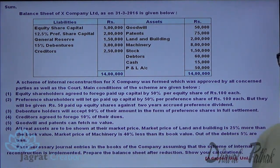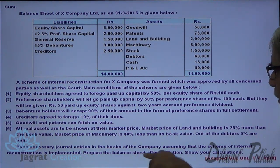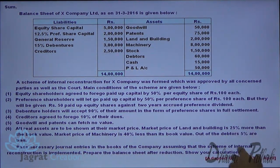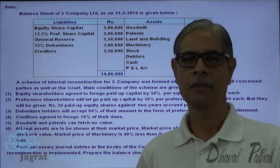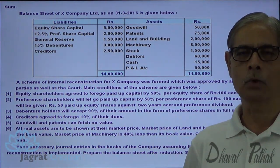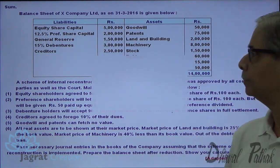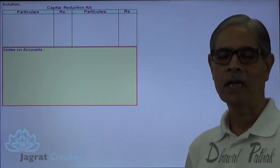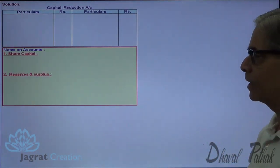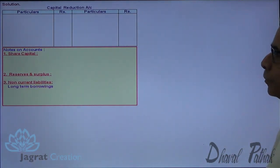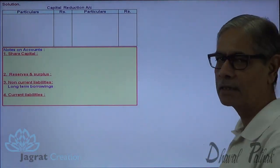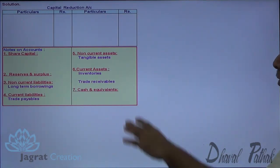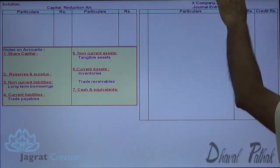We are required to prepare necessary journal entries and also prepare the balance sheet after the reduction. I am going to prepare the balance sheet as per Schedule 3, so I will prepare notes on accounts too. I will prepare the capital reduction account, notes on accounts — covering share capital and reserves and surplus — and the journal entries.